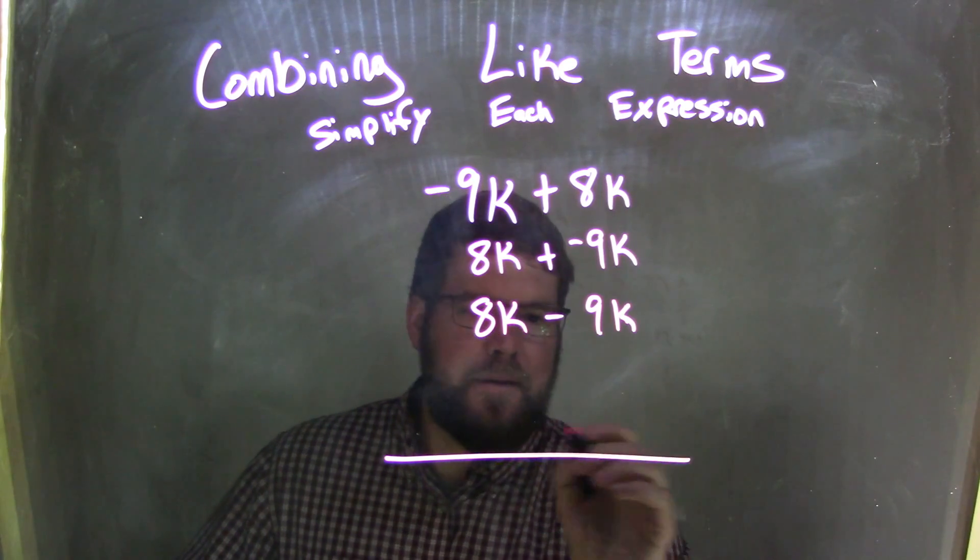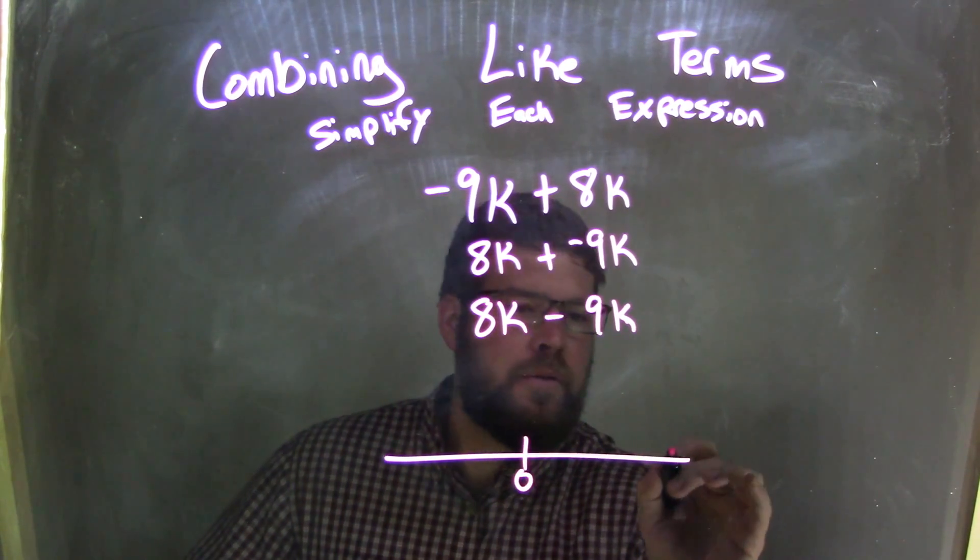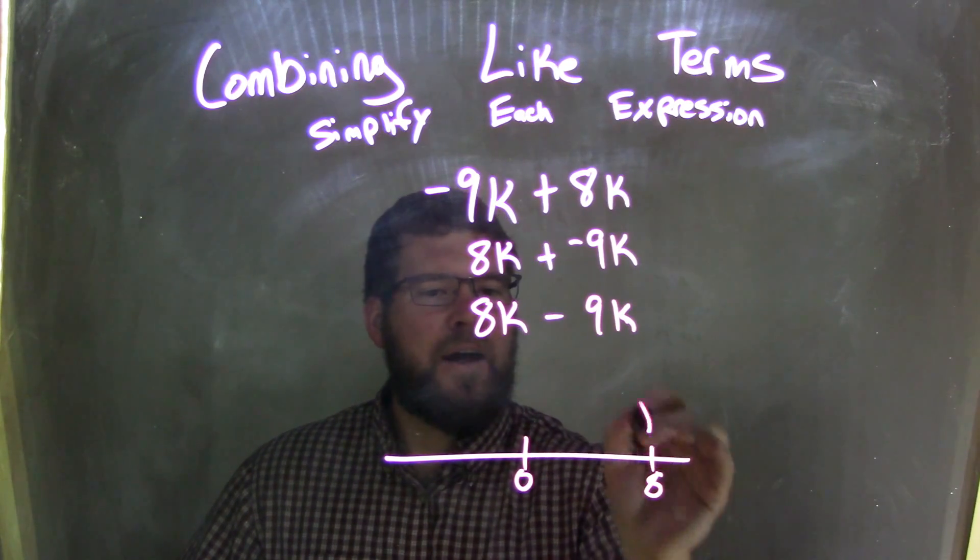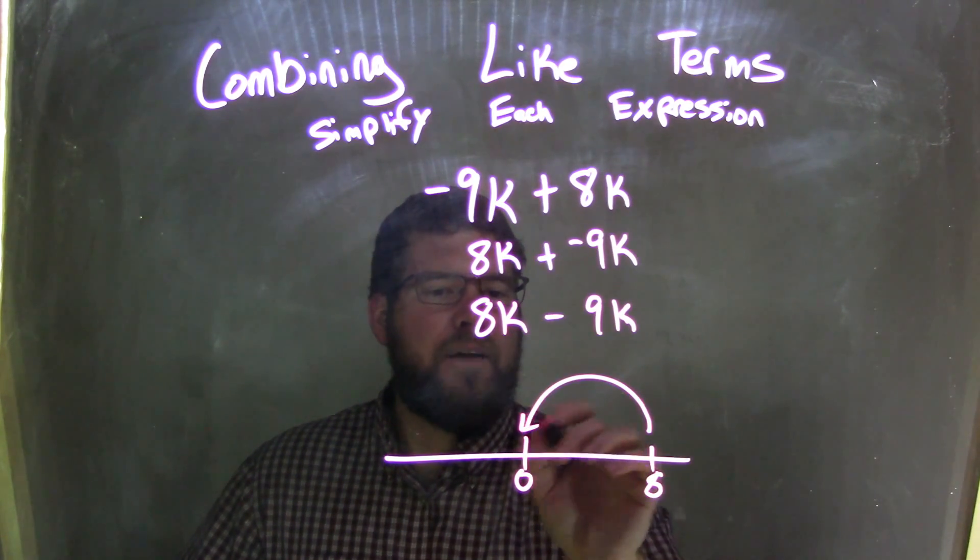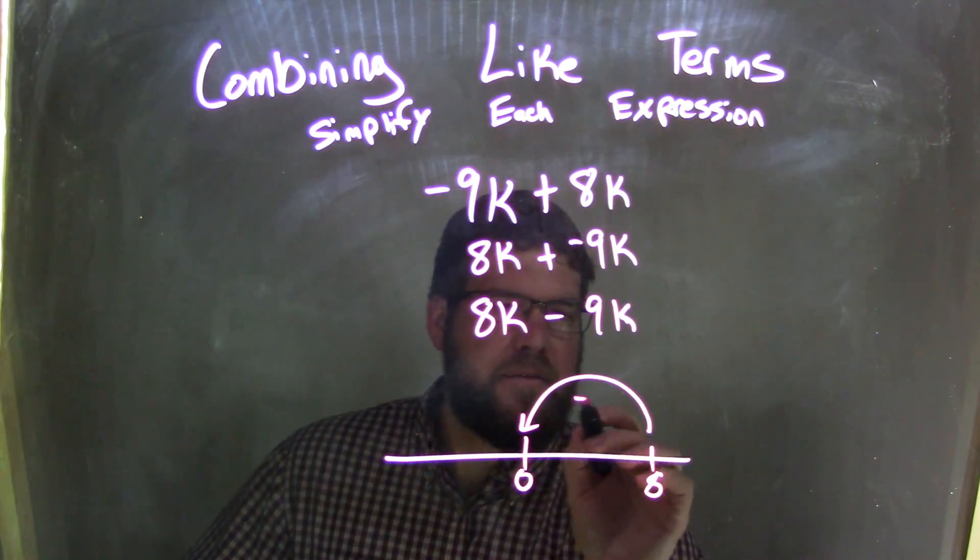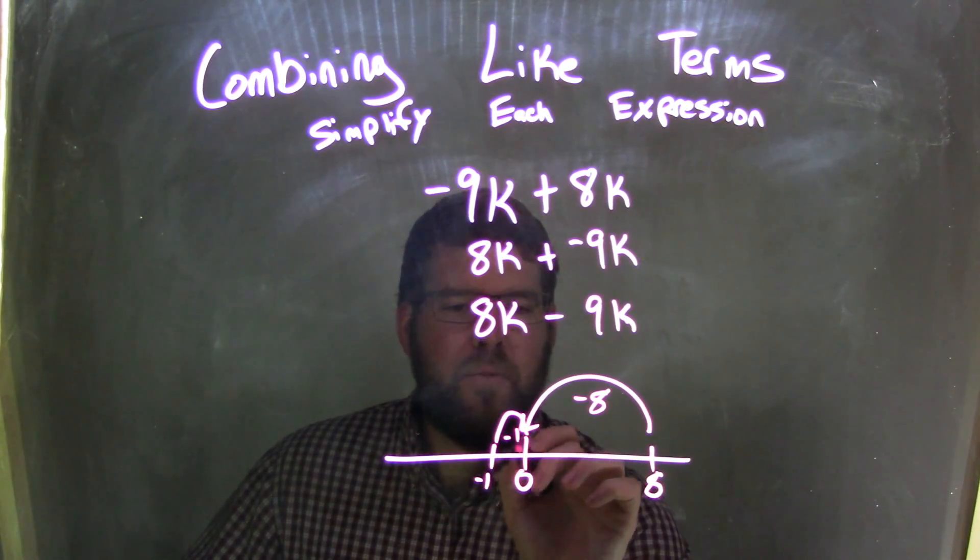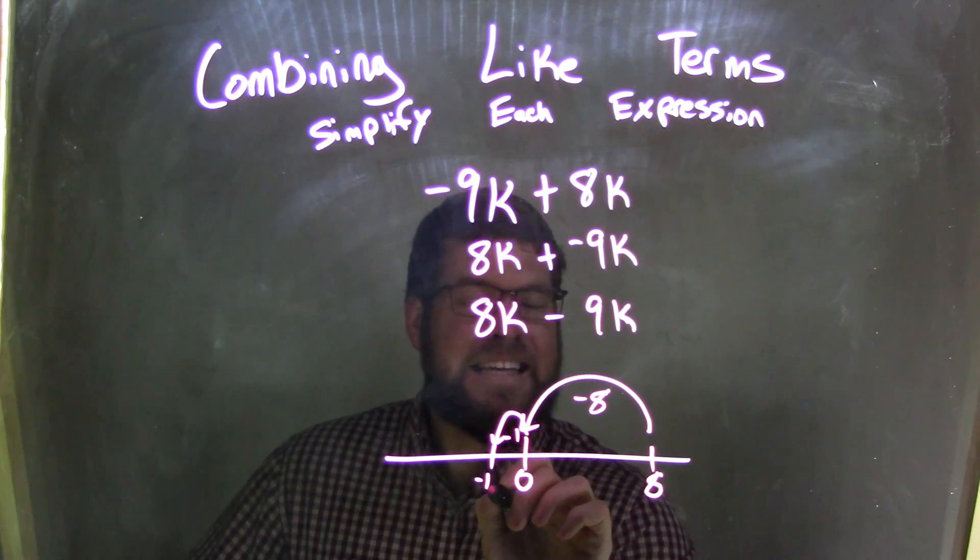So now if I look at my handy dandy number line here, start with 8, and if I move to the left, subtract 9. So move to the left. Well, if I first subtract 8, minus 8, I get to 0. And then if I just move 1, minus 1 unit, I get to negative 1.